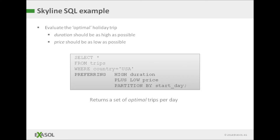Here is how we have implemented Skyline to work with our database. We have added an additional clause to the usual SQL statement so that as well as specifying WHERE and HAVING, you can optionally also use PREFERRING to select only the skyline set of values. The PREFERRING clause mentioned here contains the PARTITION BY statement, which means you will get a different skyline set for every possible start day rather than one set for all start days. There is a rich set of optional parameters such as PARTITION BY that you can use with the PREFERRING clause, and I would invite you to check out the full details in the Exasolution version 5 users guide.